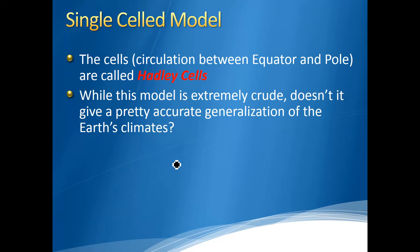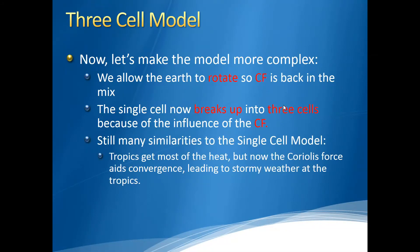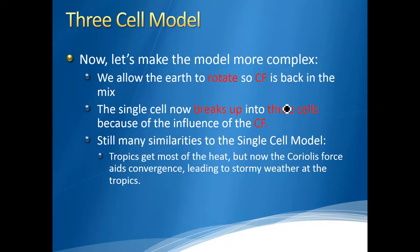In order to do that, we take this extremely crude model and add just one complexity: we rotate the Earth. Everything else stays the same — still uniformly covered with water, still sun directly over the equator — but we bring rotation back into the mix. This brings the Coriolis force back, and by doing so, we theoretically split this single Hadley cell into three different cells.